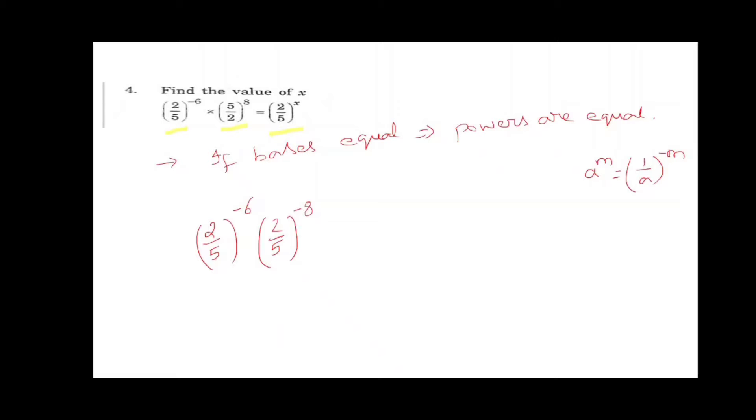Because a power m equals 1 by a whole power minus n. The reciprocal is 1 by a, so the power will get minus. Now both sides bases are equal.